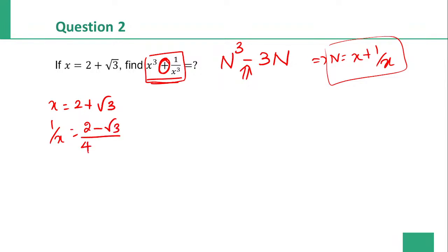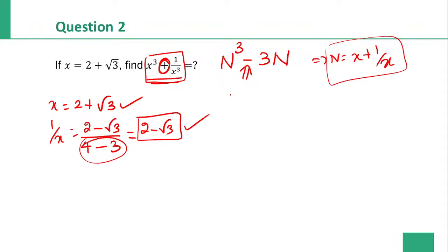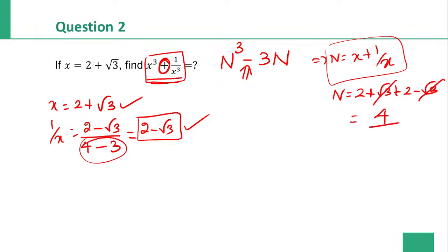x is 2 plus root 3. 2 square is 4, minus root 3 square is 3. So 1 by x is 2 minus root 3. Now, x is 2 plus root 3 and 1 by x is 2 minus root 3. So x plus 1 by x: root 3 and minus root 3 cancel.